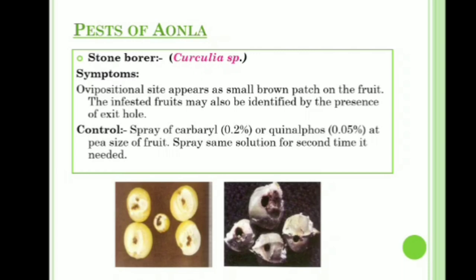Another pest is stone borer (Curculio species). Symptoms: oviposition site appears as small brown patch on the fruit; infested fruit may be identified by the presence of exit holes. Control: spray Carbaryl 0.2 percent or Quinalphos 0.05 percent at pea size of fruit; spray the same solution a second time if needed.